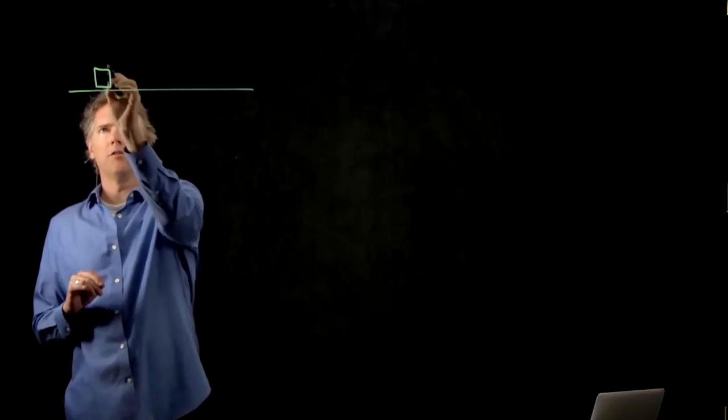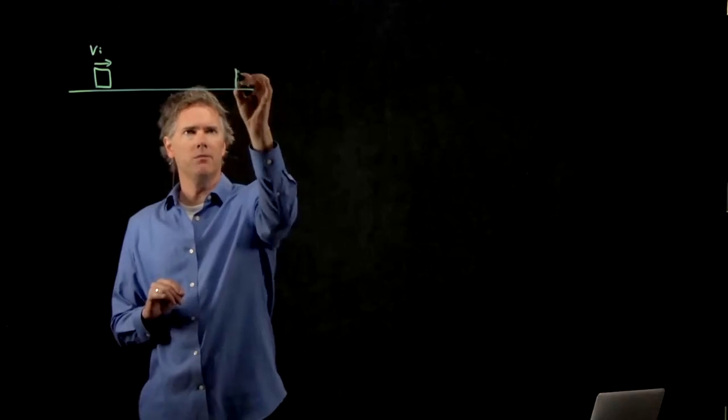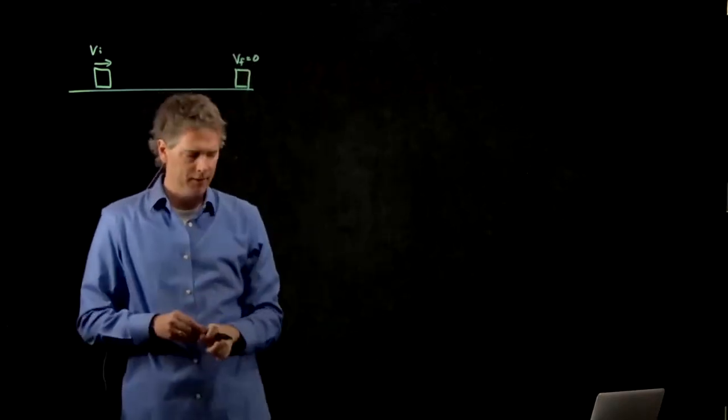So let's see how this works. If I have a box that's sliding along a surface and it's going at some vi and then it eventually comes to a stop, so vf equals zero.